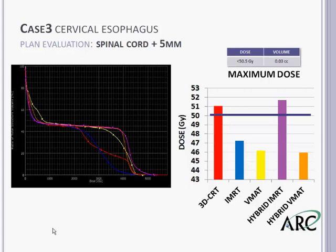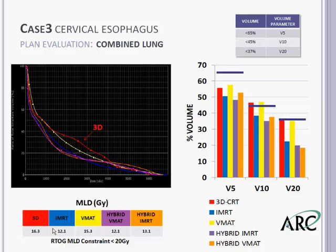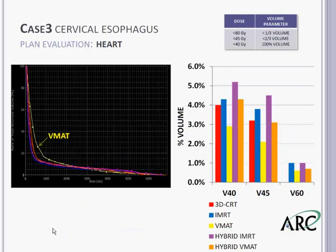For combined lung dose, the VMAT plan was among the highest, while IMRT and the hybrid plans were actually among the best. The heart was not an issue based on tumor location — it was so far superior that we just caught a small portion of the heart in the inferior PTV. The V40 was virtually nothing, in the range of 3 to 5%.